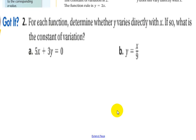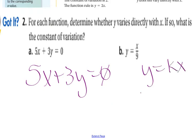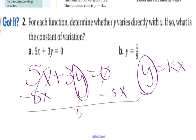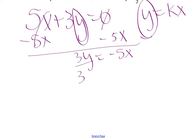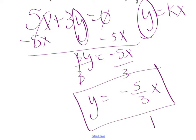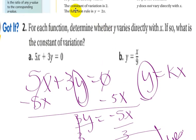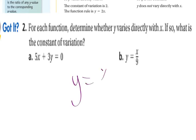Next, we went over these. So, it says for each function, determine whether y varies directly with x. If so, what's the constant variation? So, we have 5x plus 3y equals 0. We need to make it look like y equals kx. So, we need to solve for y. So, I'm going to subtract 5x from each side. And I get 3y equals negative 5x plus 0. Next thing, I need to isolate my y. So, divide each side by 3. And I get my y is equal to negative 5 thirds x. Well, yes, this is a direct variation. And my k value is equal to negative 5 thirds.